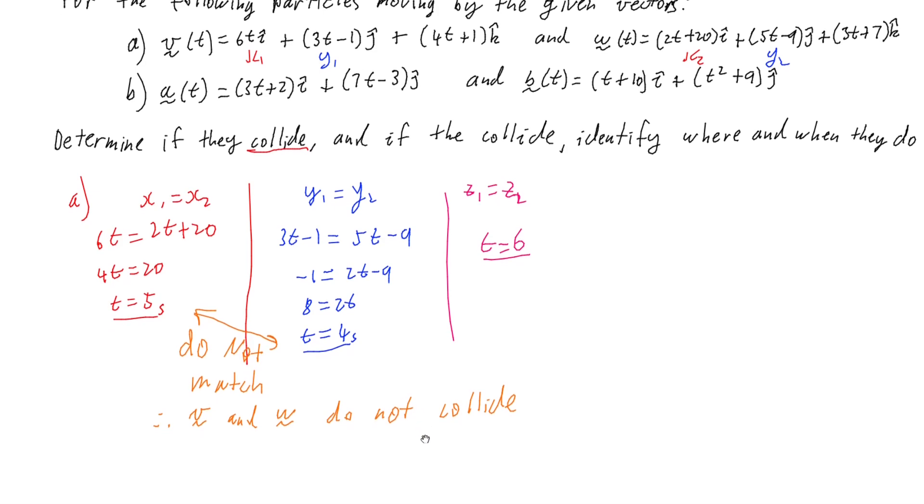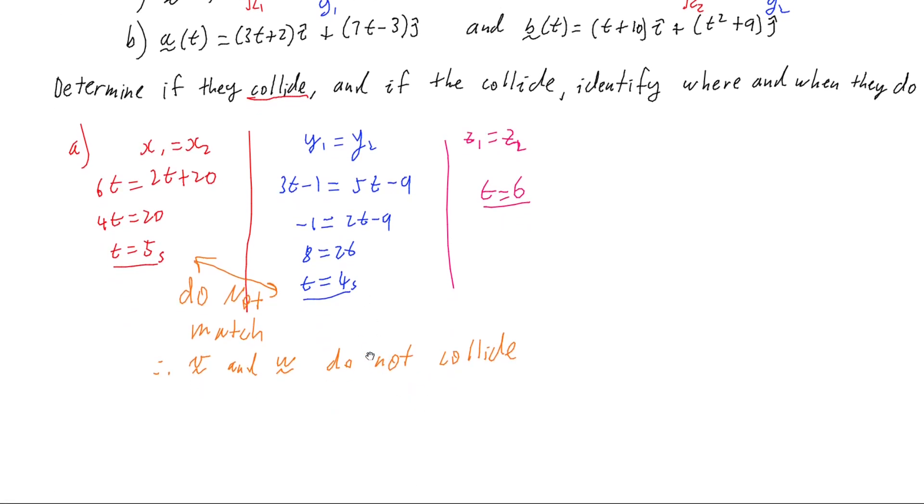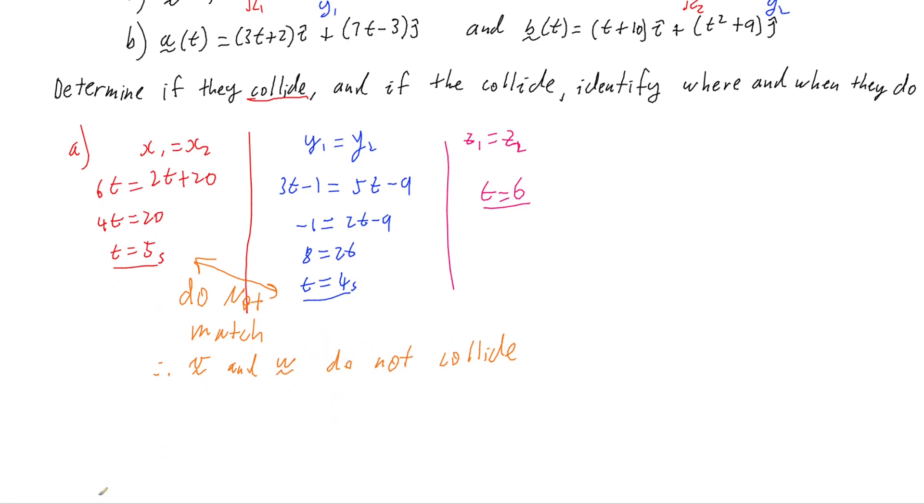So let's go and have a look at my part B. For part B, if I'm going to do this same process, I've only got the two coordinates. So let's have a look at what we get. If I equate the x's, I've got 3t plus 2 equals t plus 10.